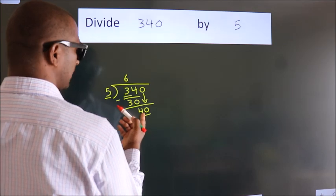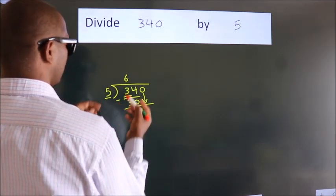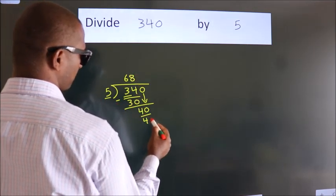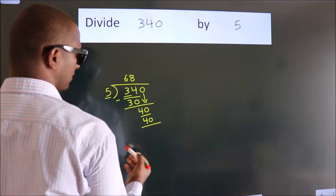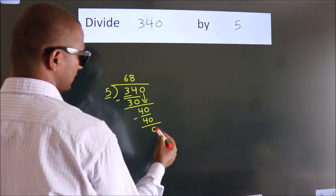When do we get 40 in the 5 table? 5 times 8 is 40. Now we subtract. We get 0.